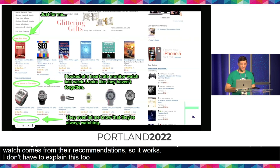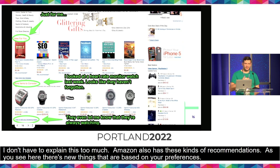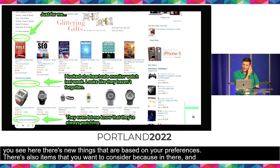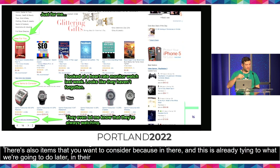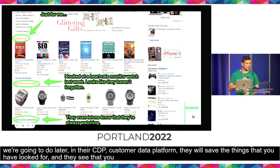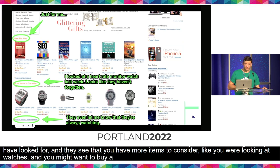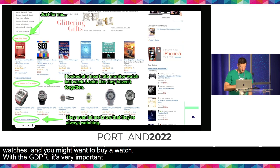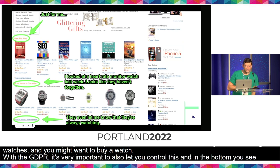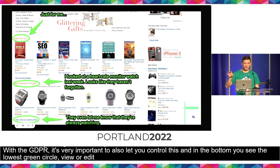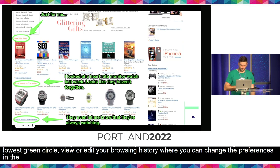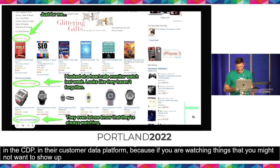Amazon also has these kinds of recommendations. There are new things based on your preferences, and also items you want to consider. In their CDP — customer data platform — they save the things that you have looked for. They see you have more items to consider, like you were looking at watches and you might want to buy one. With the GDPR, it's of course very important to also let you control this. In the bottom you see a green circle: 'view or edit your browsing history,' where you can change these preferences in the CDP.